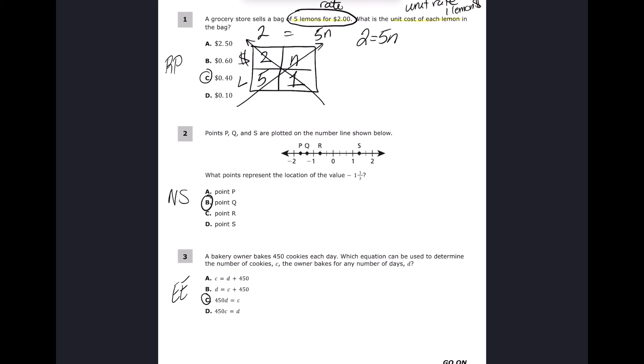I want n by itself, so I divide both sides by five — because five divided by five is one — and I get two-fifths. I can't leave my answer like this because that's not how money works, so I'm going to rewrite this as a division problem.